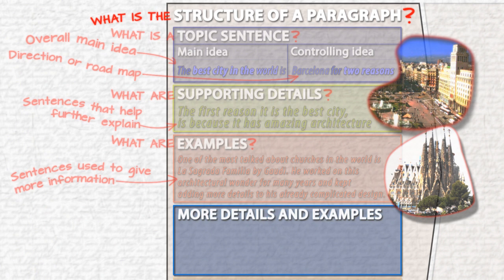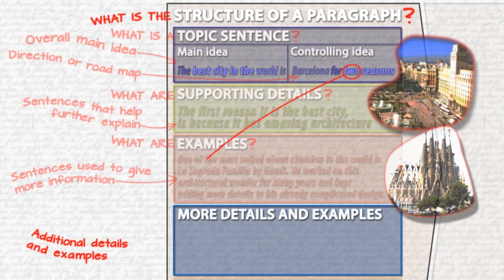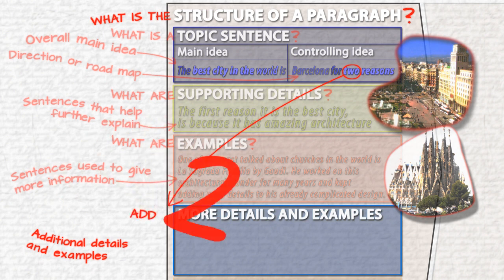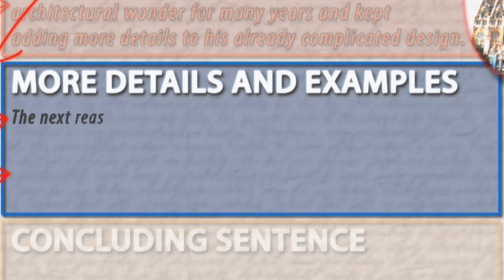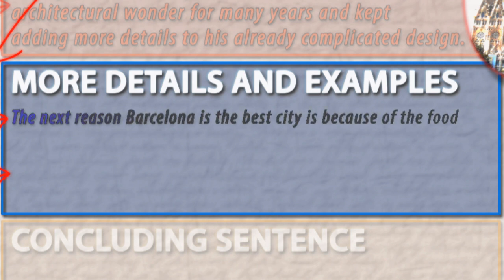Depending on how long your paragraph should be, you would need to add more supporting details and examples. Because two reasons were mentioned in the topic sentence, this means that one more supporting detail and example have to be added. Second supporting detail. The next reason Barcelona is the best city is because of the food.